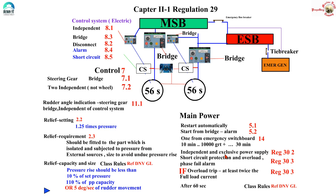Further rules are added by Regulation 30. Regulation 32 says the source of power should be an independent and exclusive source — that means you cannot have one circuit breaker servicing two main steering gears. They should be independently supplied, and of course one of them will be routed to the emergency switchboard.